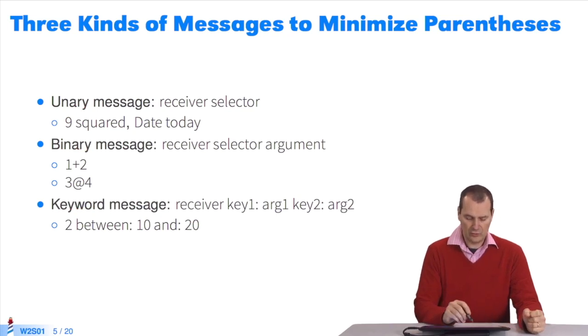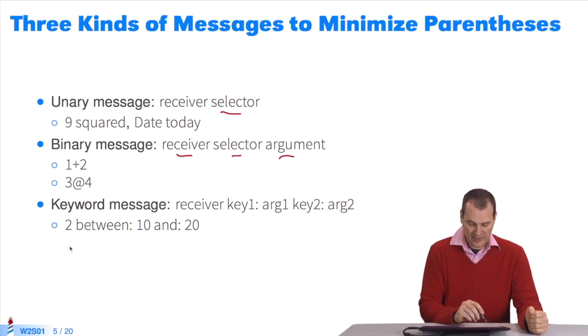With unary messages, you have one receiver, then the method's name. With binary messages, one receiver, the selector, then an argument. With keyword messages, one receiver, then one argument or arguments. You can distinguish them thanks to the colon here.